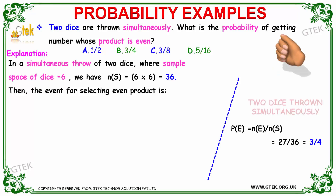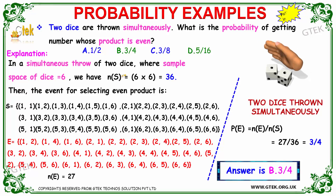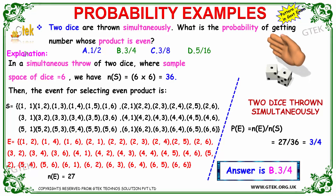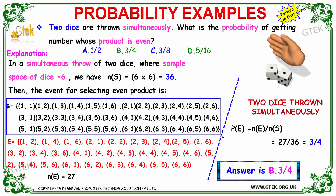The number of possible outcomes in the sample space is 36. The favorable events are those with an even product: 1×2, 1×4, 1×6, 2×2, 2×4, 2×6, 4×6, 4×4, 4×2.